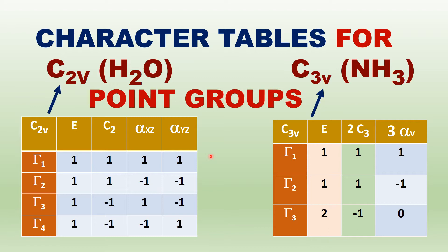Gamma 1, Gamma 2 — here, Gamma written as a small Greek letter refers to the irreducible representation label (as in gamma radiation). However, the capital Greek letter Gamma is used in the notation for irreducible representations.